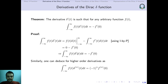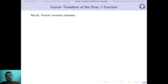In a similar way we can deduce for higher order derivatives. Any arbitrary function multiplied with the nth derivative of the Dirac delta function gives minus 1 to the power n times the nth derivative of the function evaluated at zero.